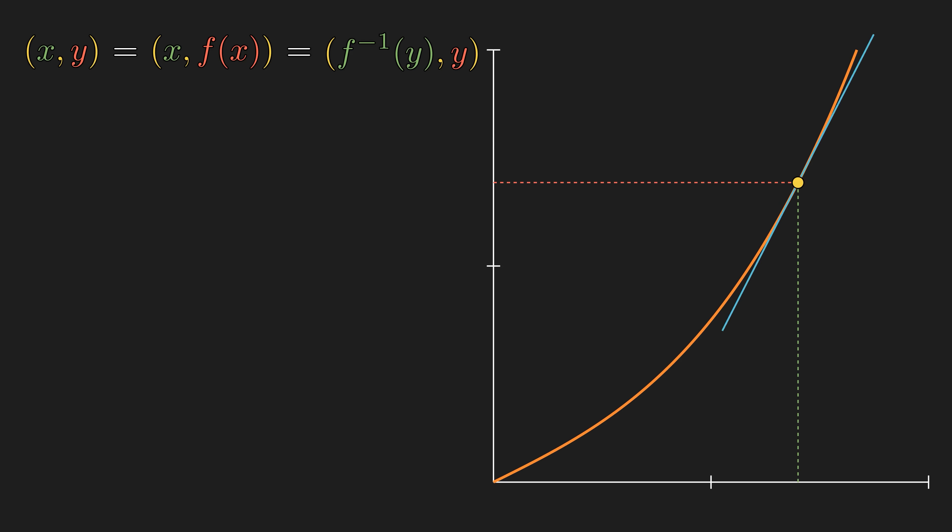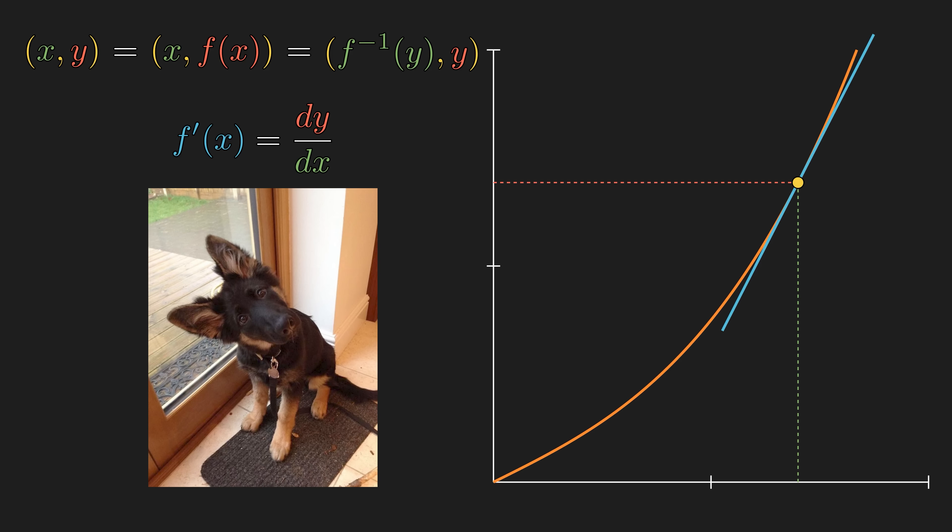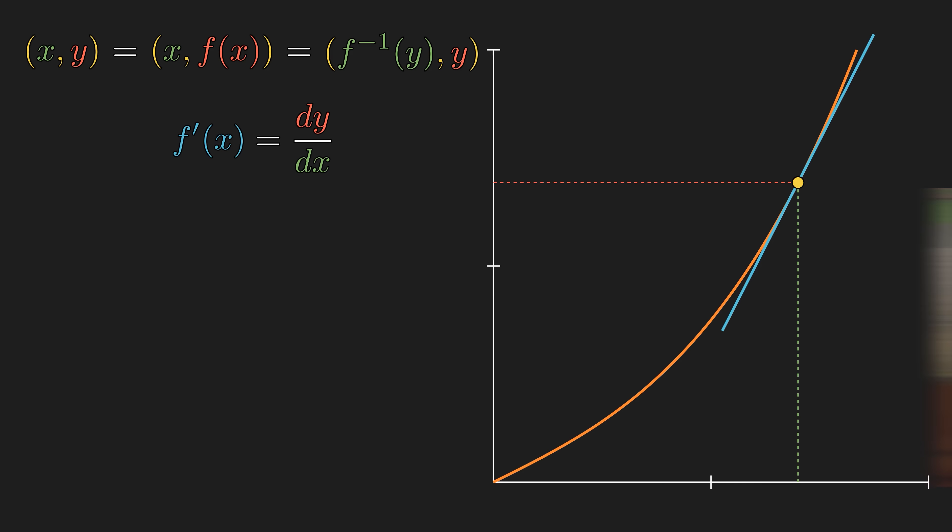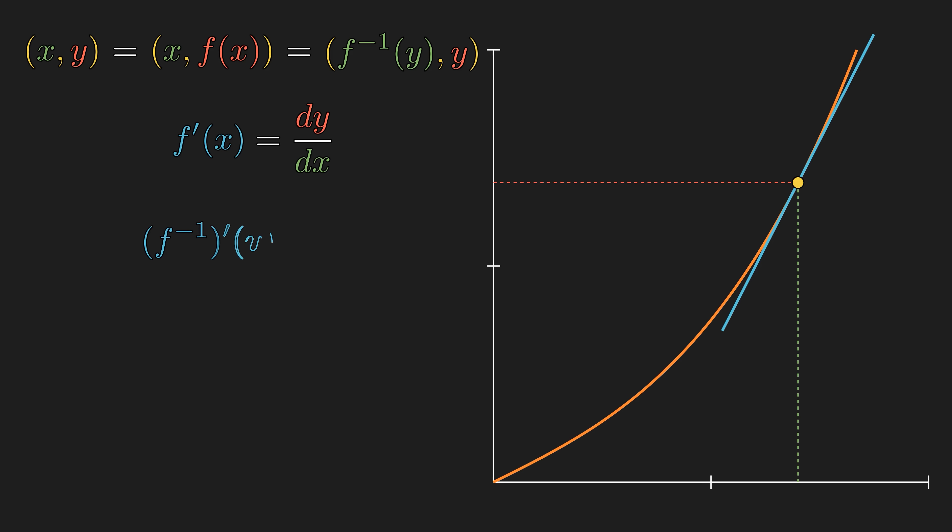Now, slope at that point is f' of x, which is infinitesimal rise over run. Now, do a quick head tilt and think of y as the input. Then, the derivative of f inverse of y is run over rise at the same point.